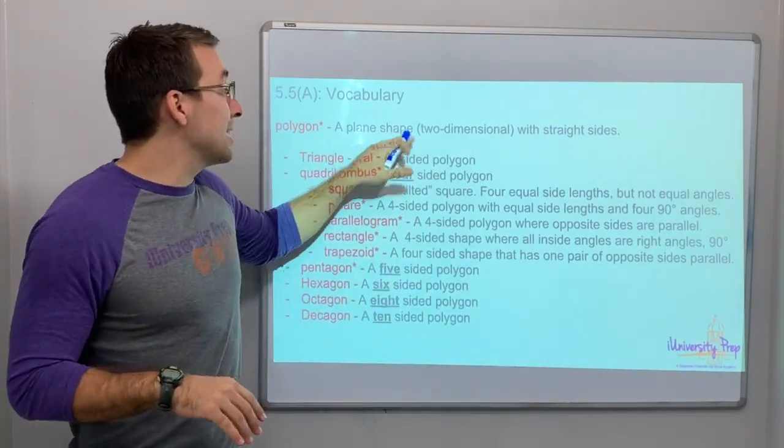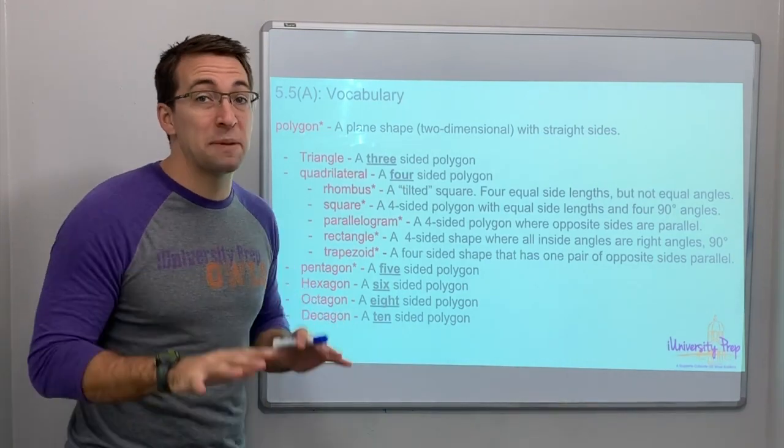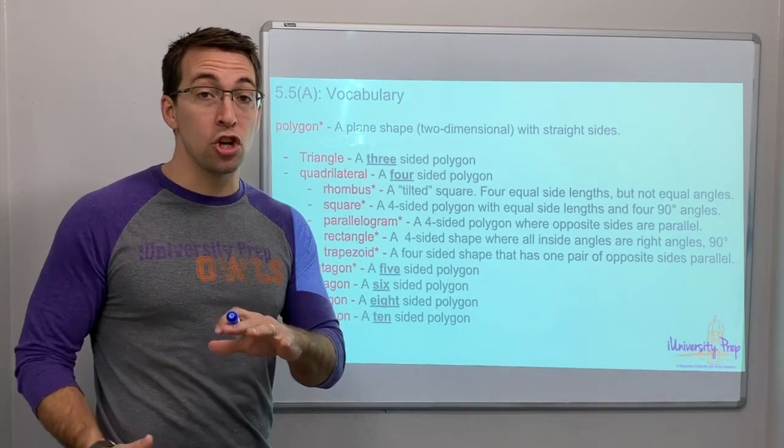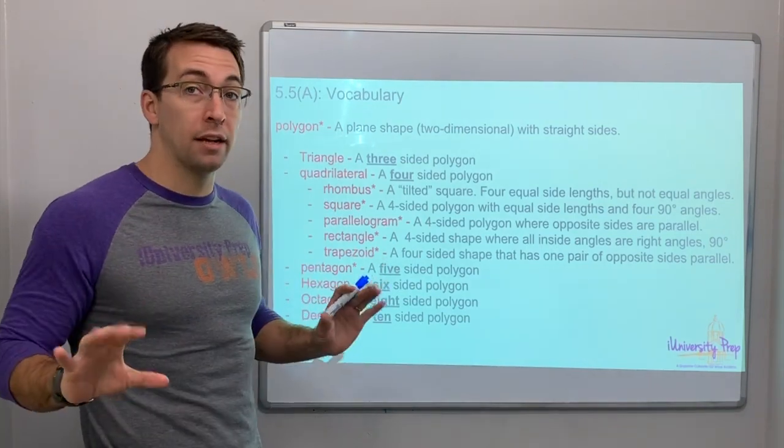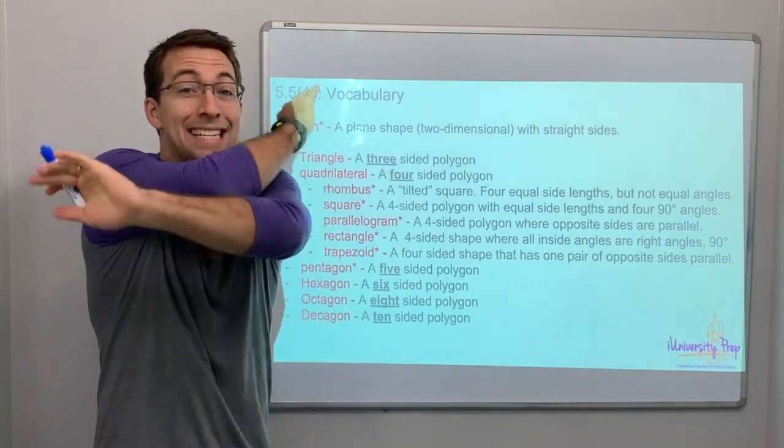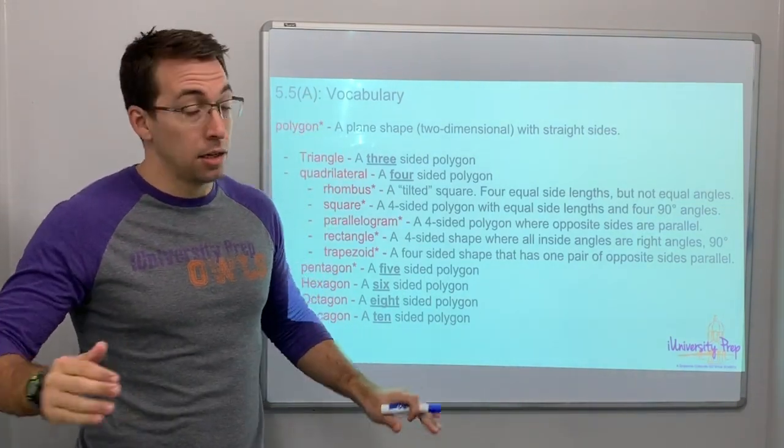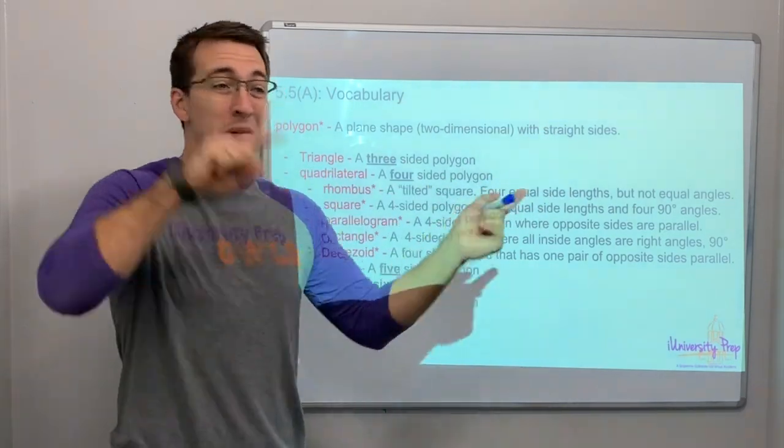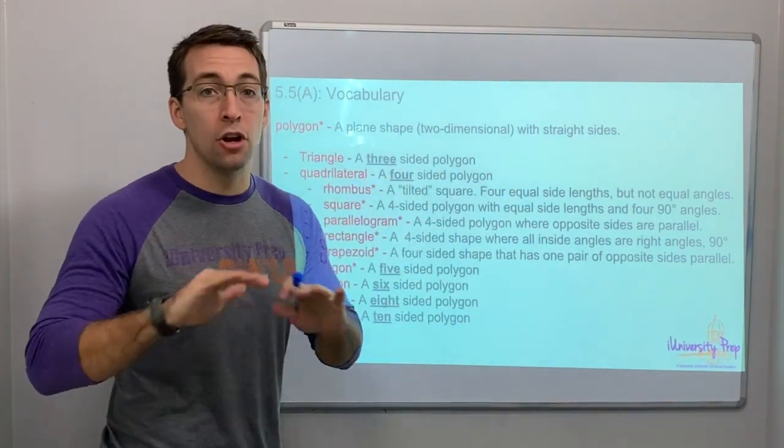A polygon is a plane shape, a simple two-dimensional shape - not three-dimensional, not a cube, not a sphere - with straight lines. A circle is not a polygon. A polygon can only have straight sides. It can be as funky as you want it to be, but no curves.